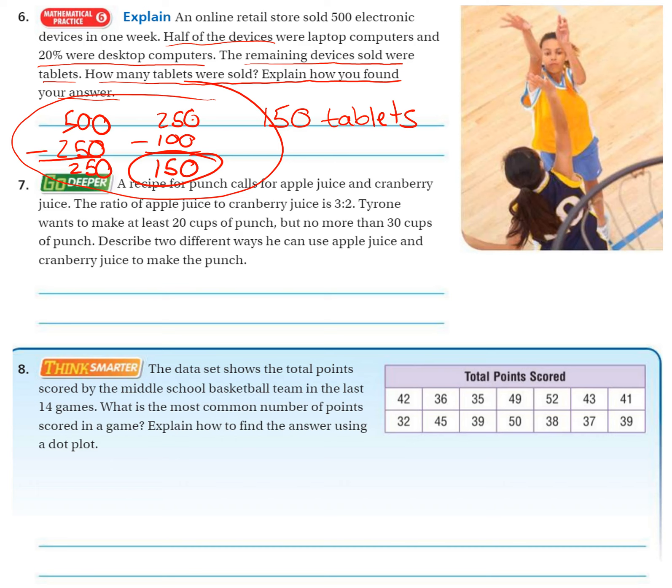Half of 250, and then 20% of 500 took those away, which was 350 total, leaving 150 left. Okay, number seven.